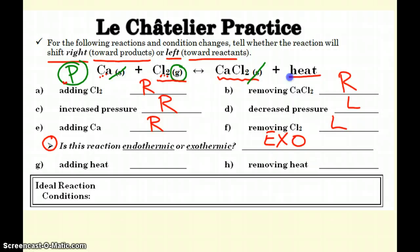Heat — adding heat, just treat it like it's in the reaction. Poking the heat is going to cause the reaction to move away to the left. Remove the heat, and you're going to cause the reaction to replace it by making more of it.